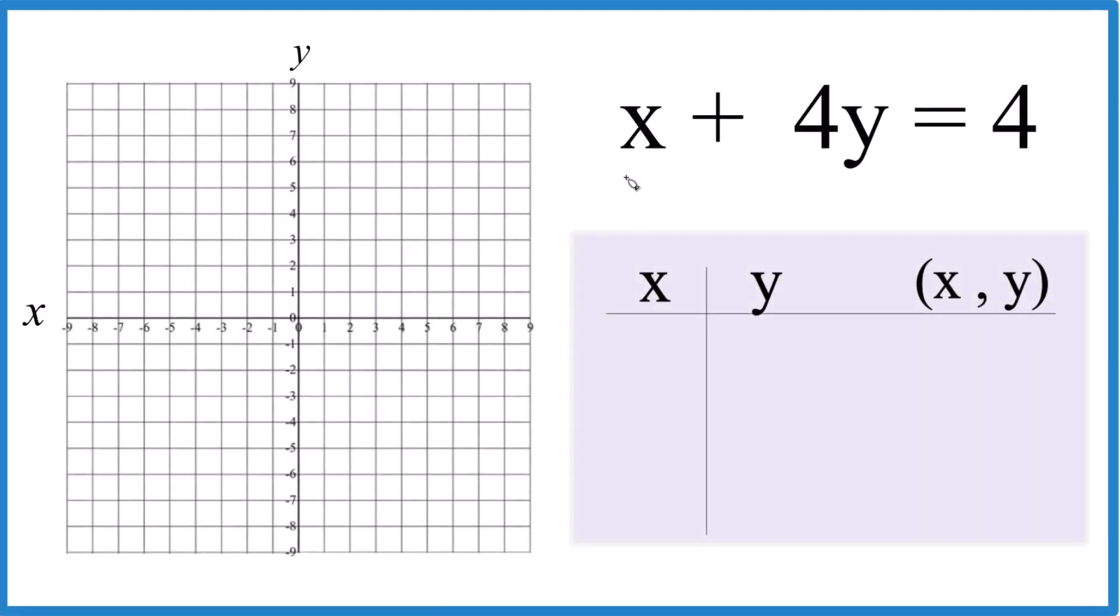Let's graph this linear equation here. We have x plus 4y equals 4, and we're going to use a table of values to do this. You could use slope-intercept form, that would work too, but here we'll use the table of values. I think it's a little bit easier.